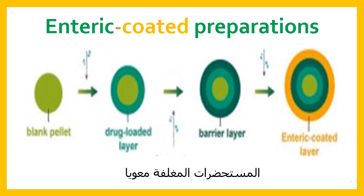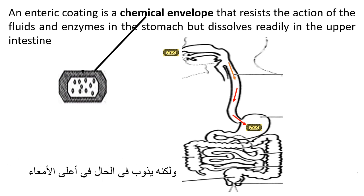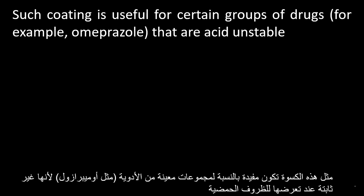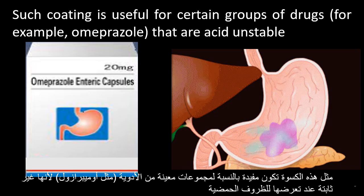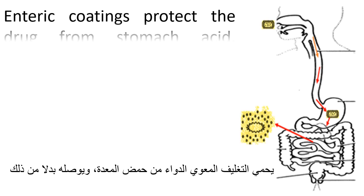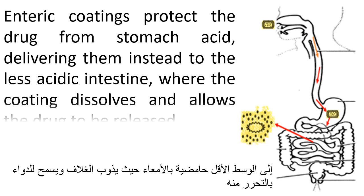An enteric coating is a chemical envelope that resists the action of the fluids and enzymes in the stomach but dissolves readily in the upper intestine. Such coating is useful for certain groups of drugs — for example, omeprazole — that are acid unstable. Enteric coatings protect the drug from stomach acid, delivering them instead to the less acidic intestine, where the coating dissolves and allows the drug to be released.